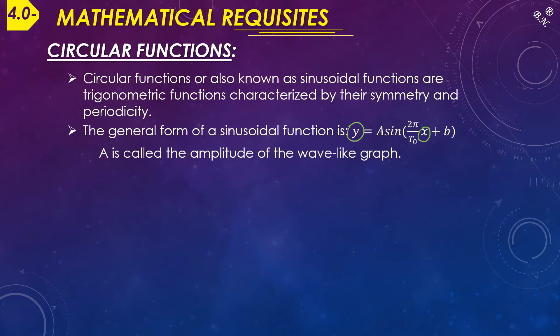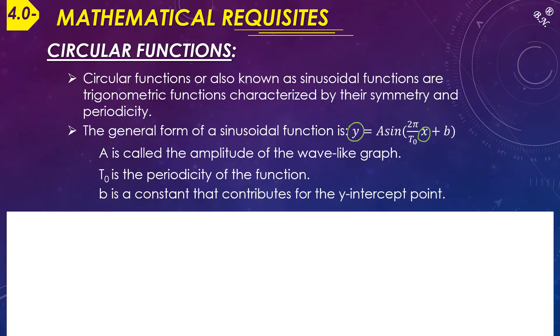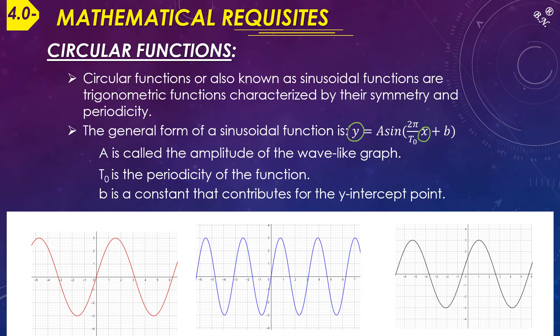A is called the amplitude of the wave-like curve, T₀ is referred to as the periodicity of the function, and b is a constant that contributes to the y-intercept point. If you check the curves we have seen, these are trigonometric functions that differ by their initial conditions.